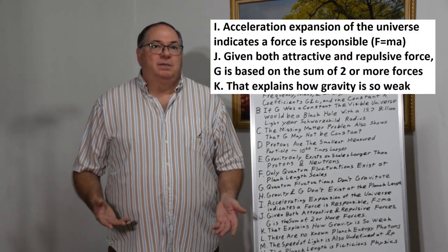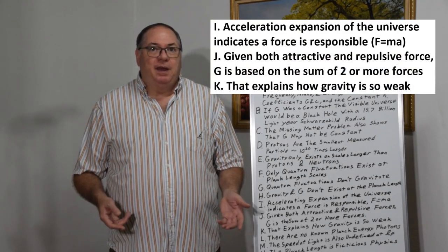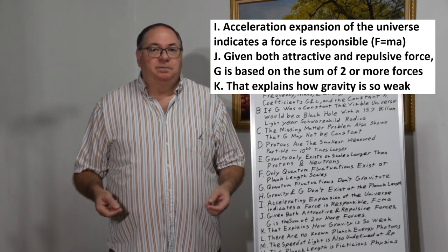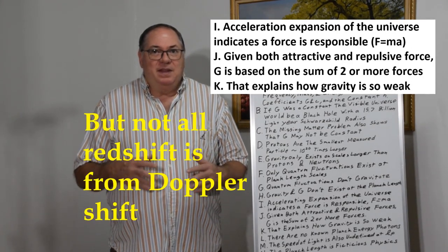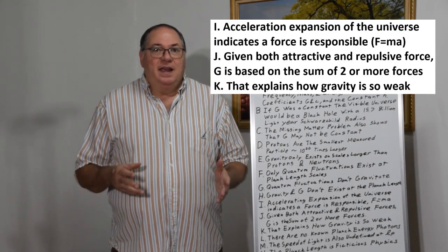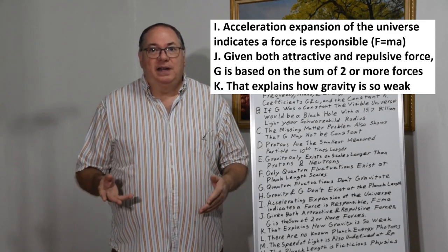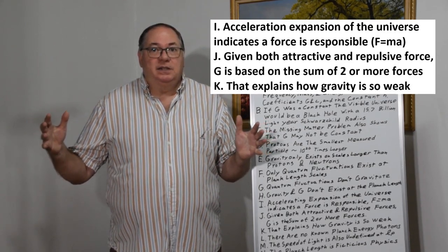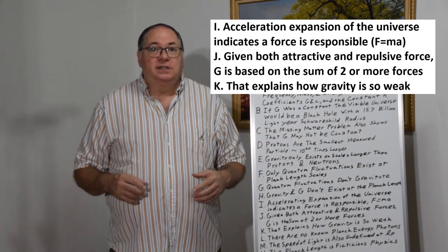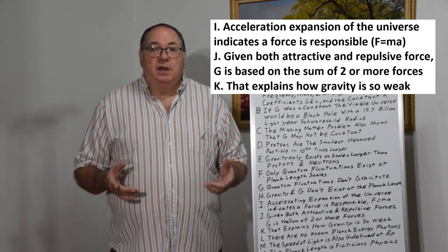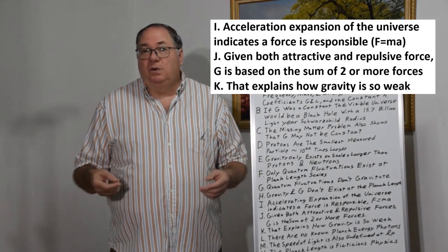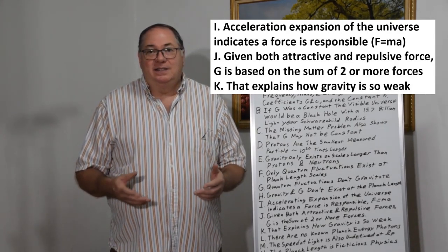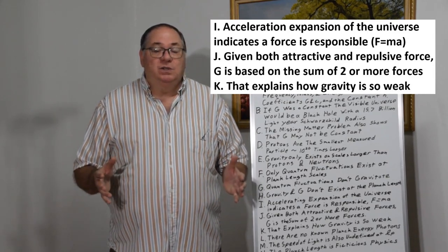We also have the dark energy problem. The assumption that there must be dark energy came about because of evidence that suggested that the expansion of the universe is accelerating. That indicates that there's a force, because if you have an acceleration, you have a force. Force equals mass times acceleration. If you have one force causing expansion and another force, gravity, causing contraction, then that tells us that gravity as we know it is the summation of two or more force terms. Which means G is not an elementary constant, and it may not even be constant depending on how these force terms vary with distance.